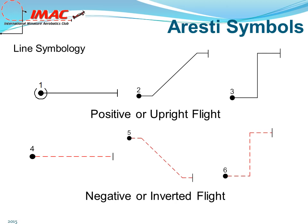Negative or inverted flight is drawn with a dashed line. When color printing is available, the dashed lines will be drawn red. With black and white printing, the negative lines will be drawn as black dashed lines. Figure four is wings-level horizontal inverted flight. Figure five begins wings-level inverted, pulls to an inverted 45-degree downline, and ends wings-level horizontal inverted flight. Figure six begins wings-level horizontal inverted, pushes to a vertical upline, and pulls to wings-level horizontal inverted flight.